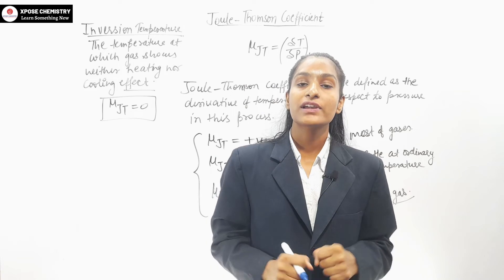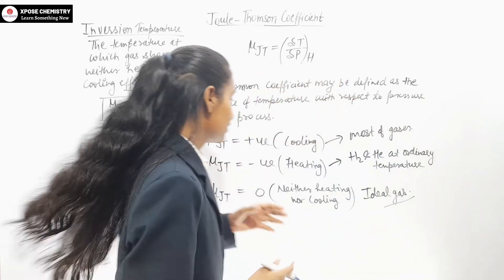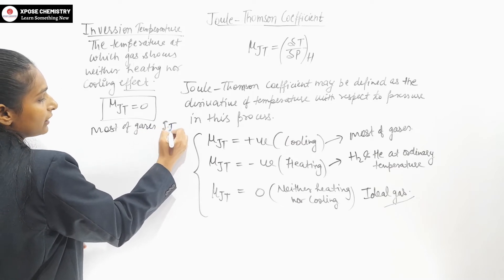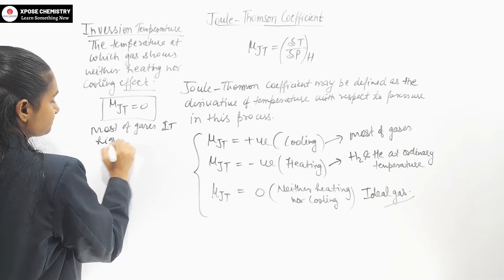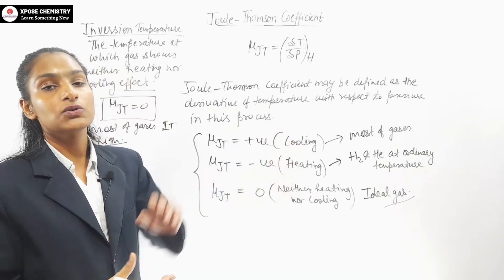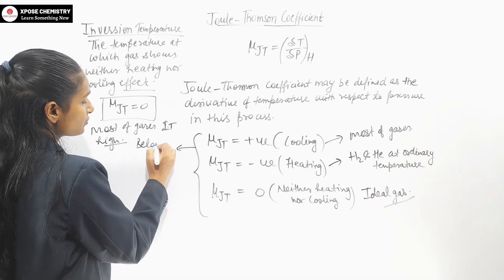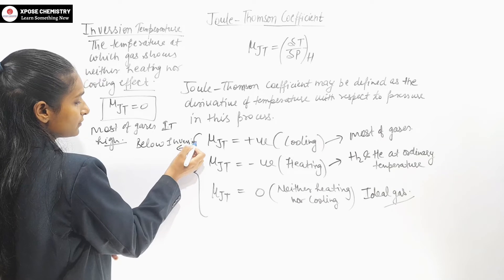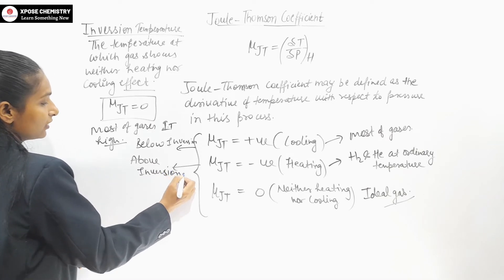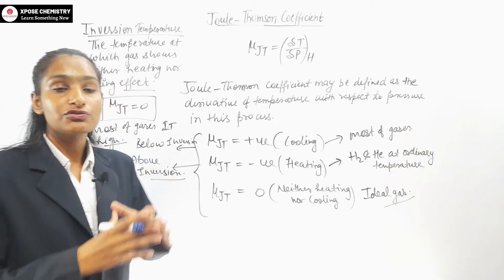For most gases that exist, the Joule-Thompson coefficient is positive and the inversion temperature is quite high. Below the inversion temperature, gases show a cooling effect. Above the inversion temperature, gases show a heating effect. So the inversion temperature is the dividing point — below it: cooling, above it: heating.